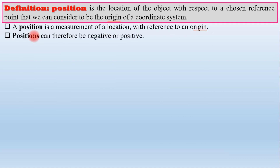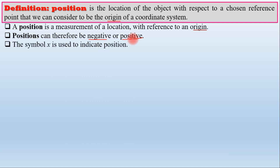The position can be negative and positive. Towards the right from the origin is a positive direction; to the left from the origin is negative. The up direction from the origin can also be considered. The symbol X is used to indicate position — X is our symbol for position.